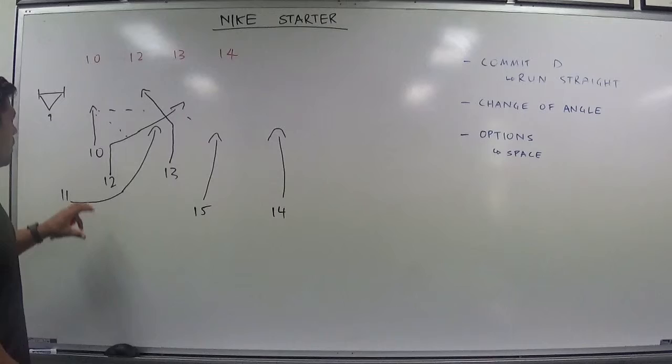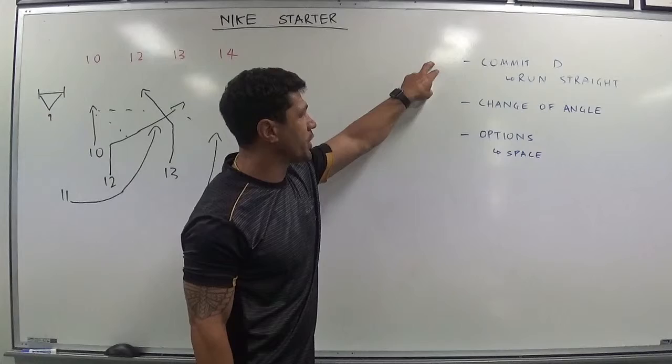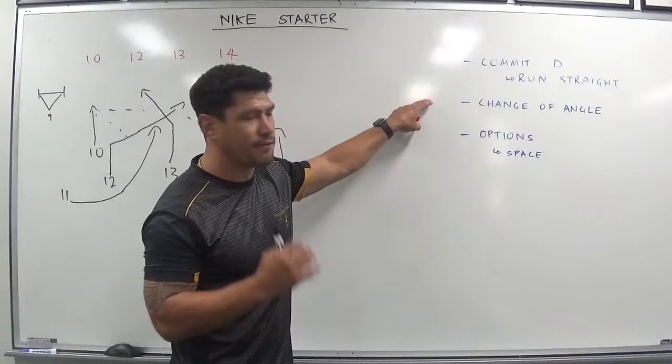So just an overview. We want to go straight to commit the defenders, go running straight, change of angle to get the defenders to be in two minds of what we're doing, and then our options.